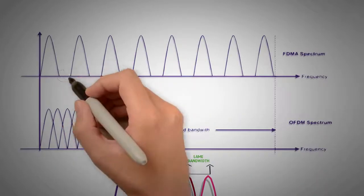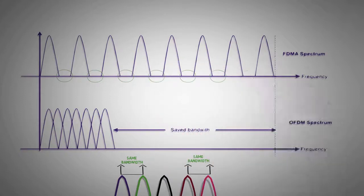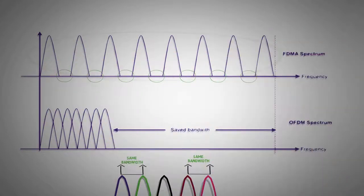This in turn negates the use of guard bands. As a result, the sub-carriers can be closely packed to increase channel efficiency.